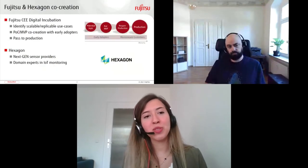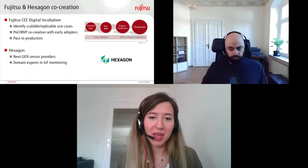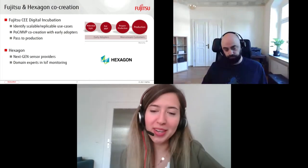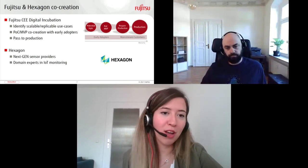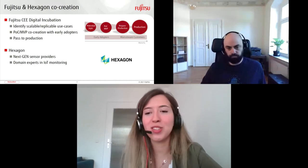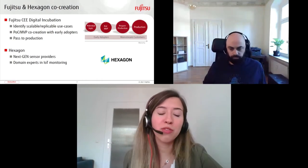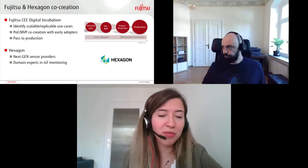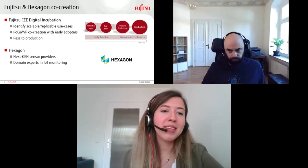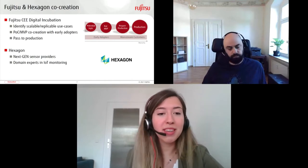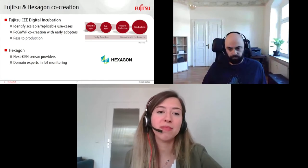We, as the Digital Incubation department at Fujitsu, partnered with Hexagon to try and address these challenges. We are located in Fujitsu Central Europe's CTO's office — a group of experts in novel technologies such as blockchain, artificial intelligence, and digital annealing. We identify use cases with high potential for scaling from a business perspective and work with early adopters from different market segments for co-creation of POCs and MVPs, which we then pass to production. Hexagon is an established global company, a pioneer in next-gen sensors and domain experts in IoT monitoring fields.